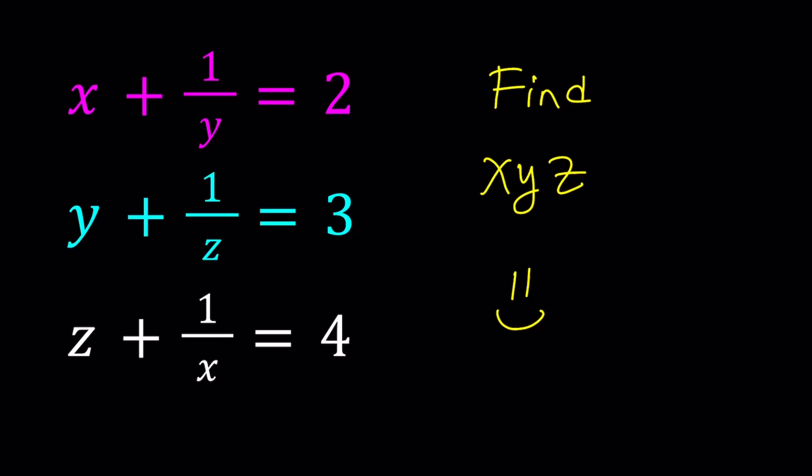Hello everyone. In this video we're going to be solving a system of equations. We have x plus 1 over y equals 2, y plus 1 over z equals 3, and z plus 1 over x equals 4. And we are going to solve for x, y, and z. The product xyz, that's what we're trying to find. Now could we find even individual values for x, y, and z? We can also look at it.